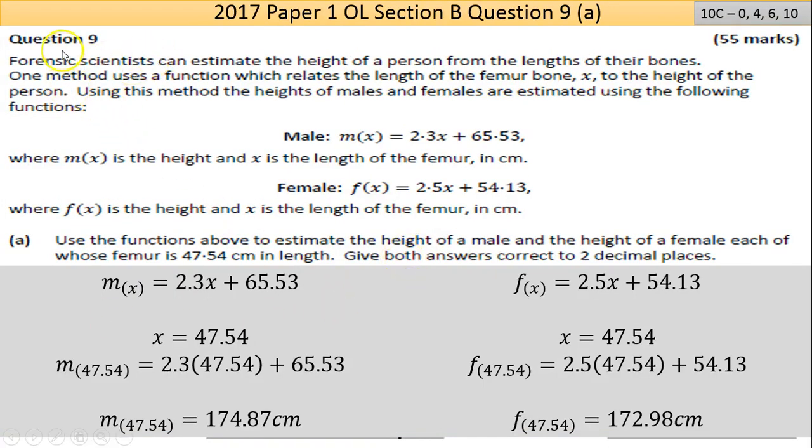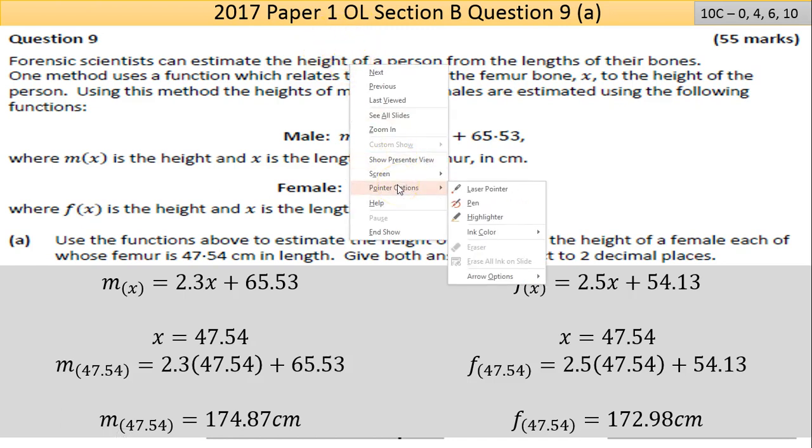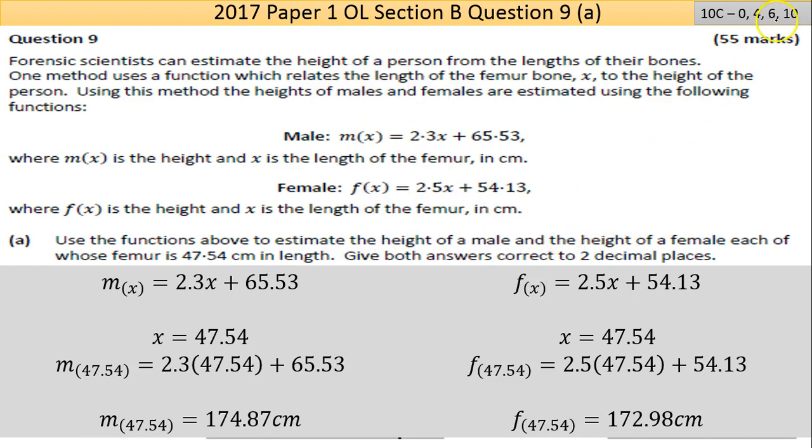Welcome to Question 9 of the 2017 Paper 1, Leaving Certificate Ordinary Level Maths. This is a 10-mark question with lower marks of 4 and higher marks of 6. Like with all the long questions on the paper, there's a lot of writing, not just reading, so be careful going through it that you don't miss something.